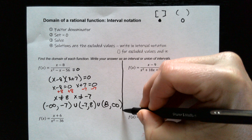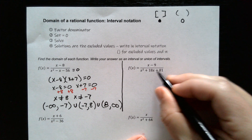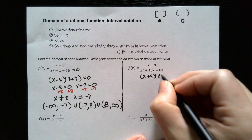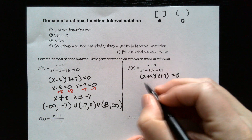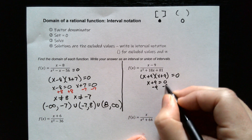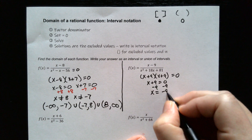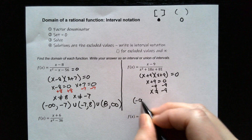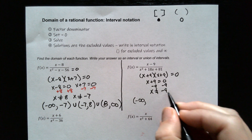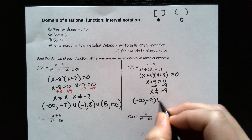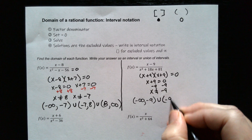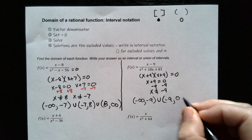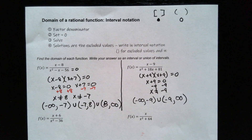Let's take a look at the next one. Two numbers that multiply to get 81 but add to get 18 — that's 9 and 9. So this becomes (x plus 9)(x plus 9) equals zero. Notice they're the same, so we only have to solve one: x plus 9 equals zero. We subtract 9 and get x equals negative 9, which means it's excluded. So we start at negative infinity, travel along until we hit negative 9, then union and start again at negative 9 not including it, going straight to infinity. So there's your interval notation of the domain.